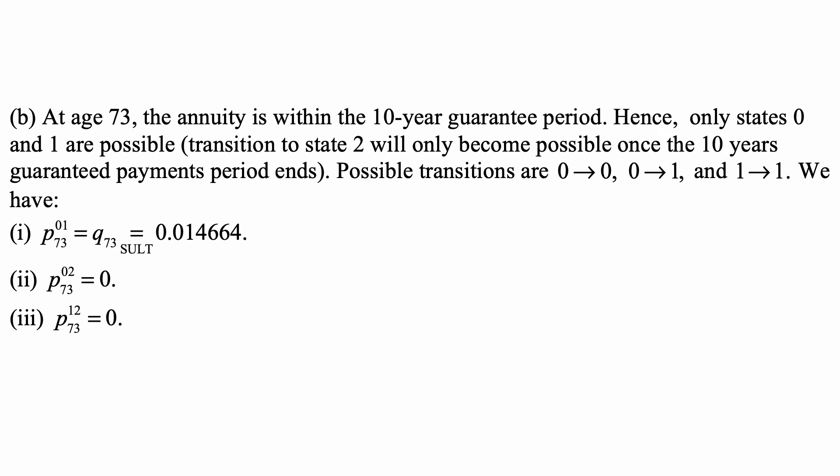Part B: At age 73, the annuity is within the 10 year guarantee period, hence only states 0 and 1 are possible. Transition to state 2 will only become possible once the 10 years guaranteed payments period ends. Possible transitions are 0 to 0, 0 to 1, and 1 to 1.